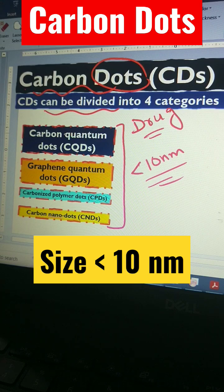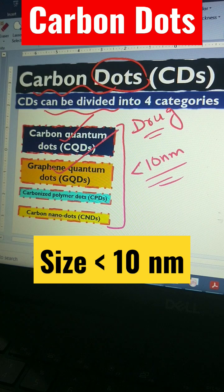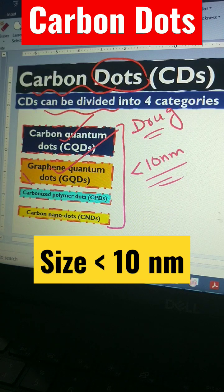The first type is called carbon quantum dots. The second is called graphene quantum dots. This means that graphene quantum dots, which are a form of carbon dot, look like sheets but are very, very small.